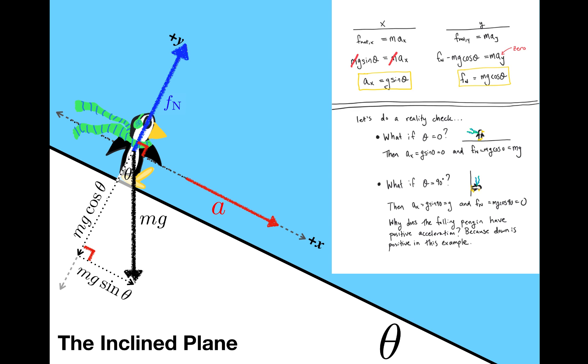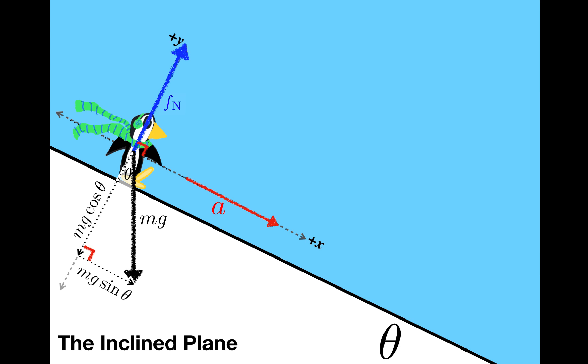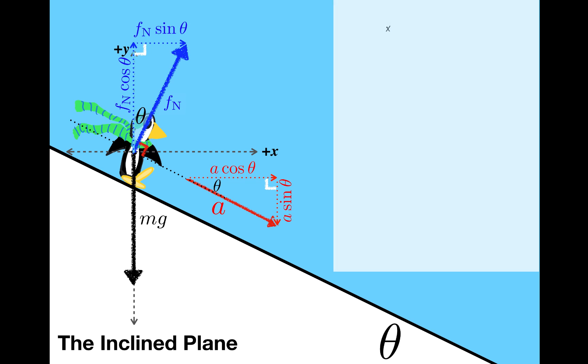That's pretty much all I have to say about the inclined plane, but I did promise you that I would show you how to do the same calculation if the axes looked like this. In this case, there's no need to have components drawn for mg, but I will need components for acceleration and for the normal force. Let me mark the angle theta here and here, and I'll also go ahead and label the components for each of these vectors. Once again, I'm going to have two equations, one in the x-direction and one in the y-direction. In the x-direction, fn sine theta is equal to ma cosine theta. In the y-direction, fn cosine theta minus mg is equal to negative ma sine theta.